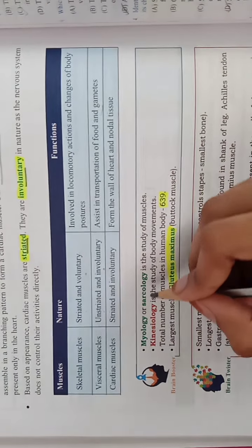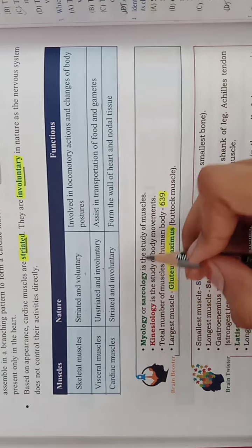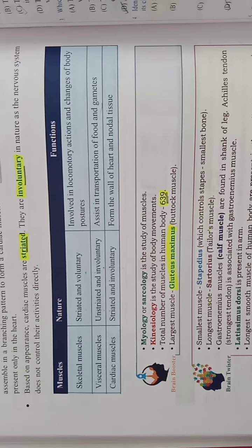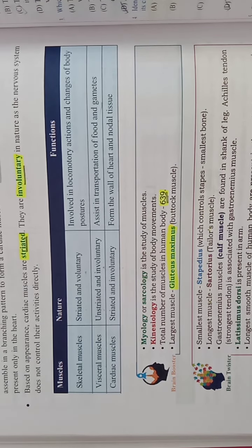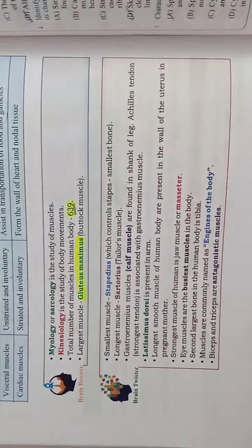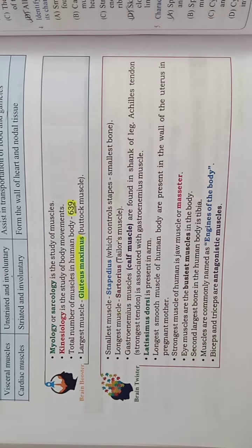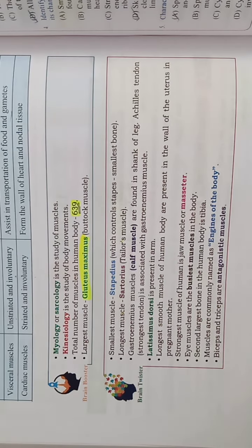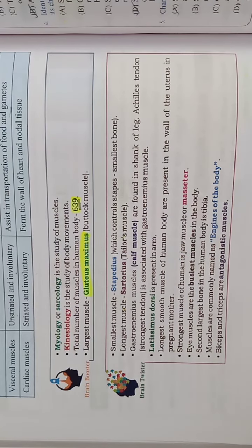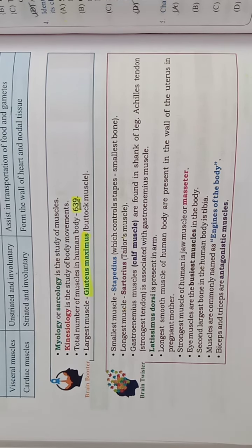As an extra point in myology: the total number of muscles in our body is 639. The largest muscle is the gluteus maximus. These are brain twister extra points. We will make a short video and upload it. Muscles topic is now complete — it was very easy.